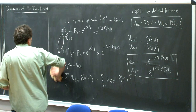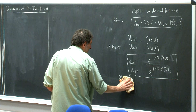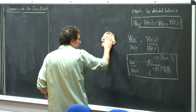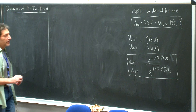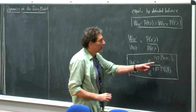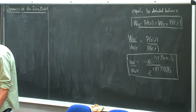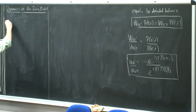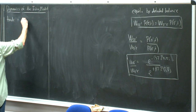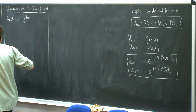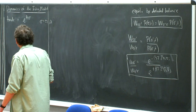On the complete graph, the flip rate is W_i = (1/2)(1 - σᵢ tanh(β/N · Σⱼ≠ᵢ σⱼ)). Since the sum over all other spins divided by N is approximately the magnetization m, we get W_i ≈ (1/2)(1 - σᵢ tanh(βm)). Now we want to compute the dynamics of spin i.